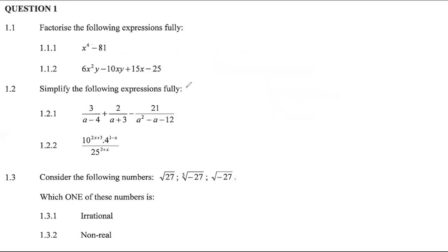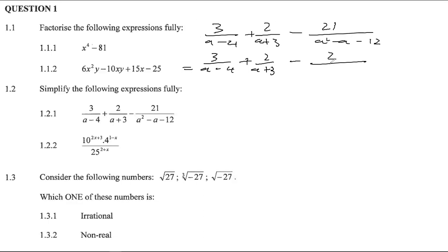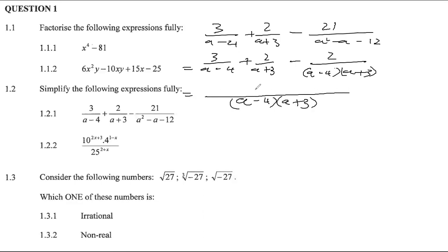Now let's look at this algebraic fractions question: 3 over (a minus 4) plus 2 over (a plus 3) plus (3a minus 21) all over (a² minus a minus 12). The first two terms are fine as they are. I just need to factorize the denominator of the last term — it's a trinomial. The existing denominators actually give me an idea of what the factors should look like, so I get (a minus 4)(a plus 3). This is the LCD.